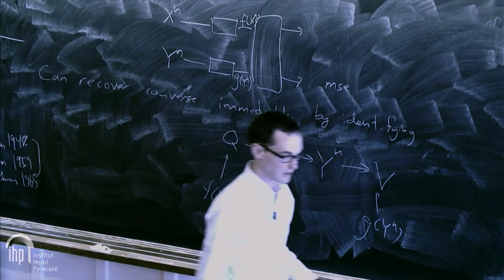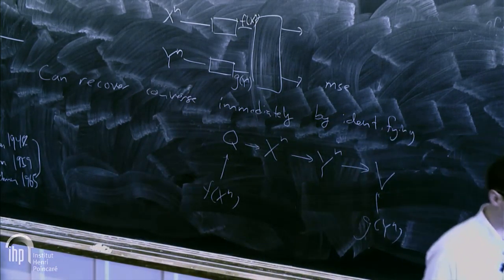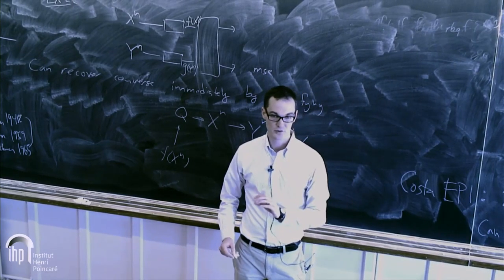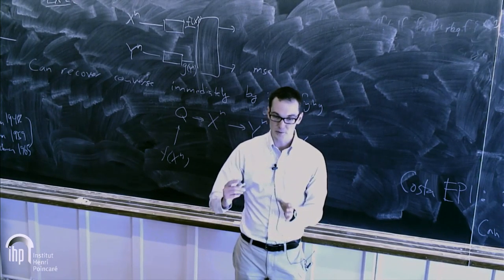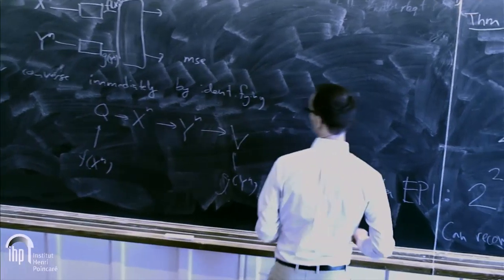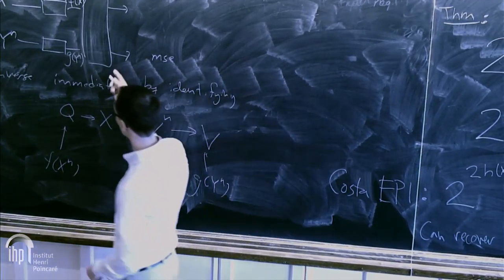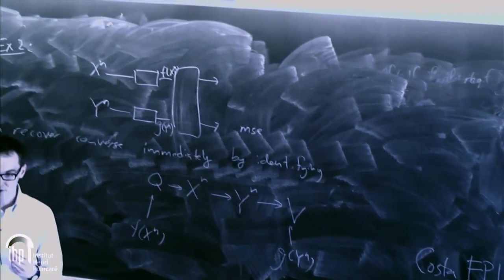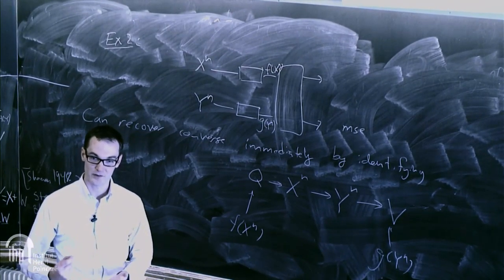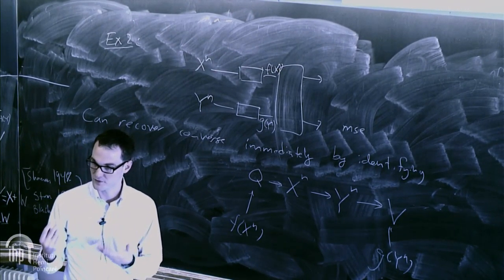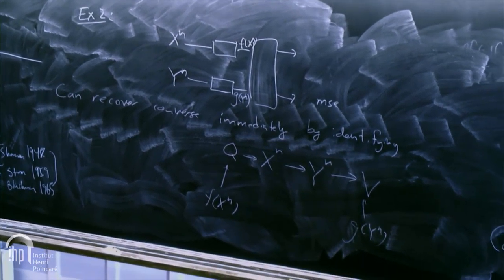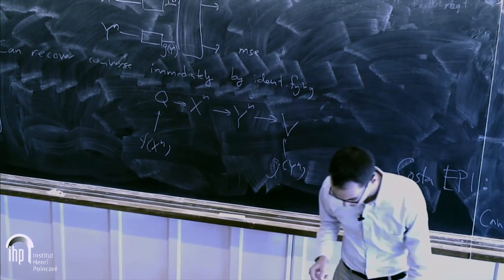This is satisfying because for Gaussian problems, people typically apply the entropy power inequality to get the desired bound. This problem was frustrating for so long because applying the standard EPI never gave the needed bound — because the appropriate strengthening was missing. Now we've discovered the secret sauce.